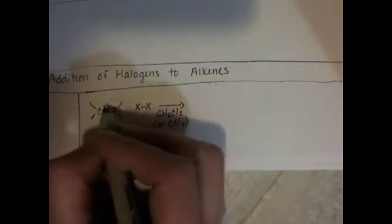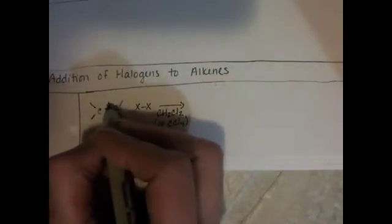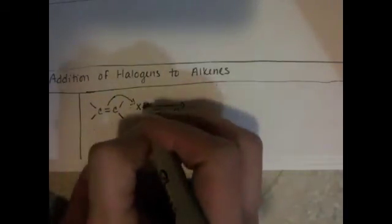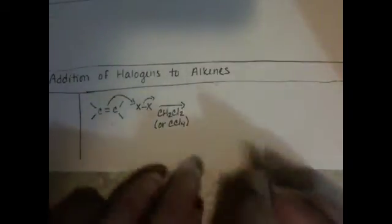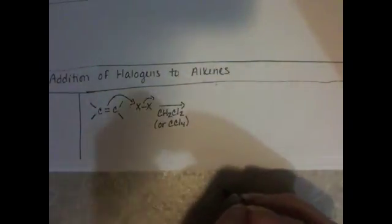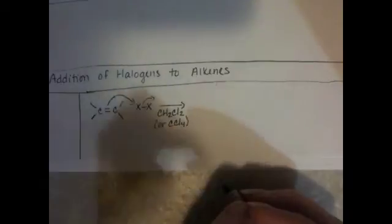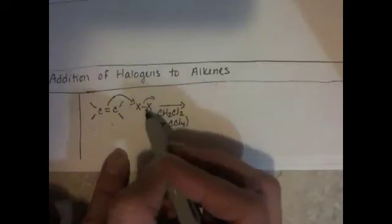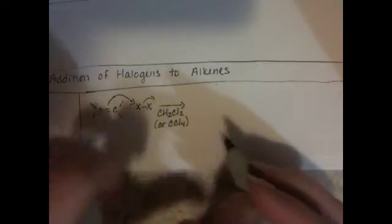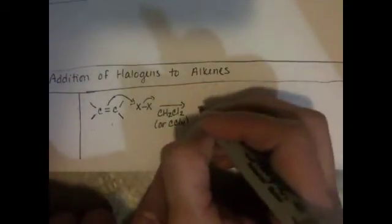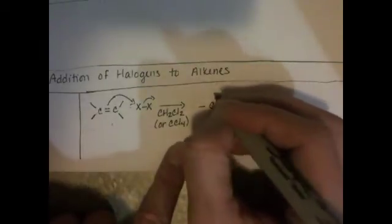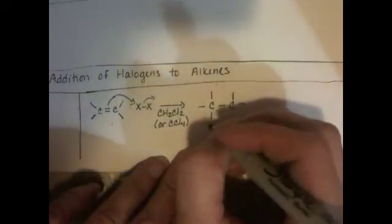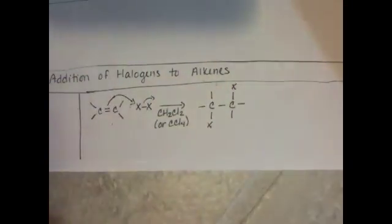What happens in this reaction is the pi electrons go after one of the halogens in the molecule, breaks the bond, produces not a carbocation. We're going to look at the mechanism for this. But it does produce a reactive intermediate. The X-minus that comes off of here ends up reacting with it.